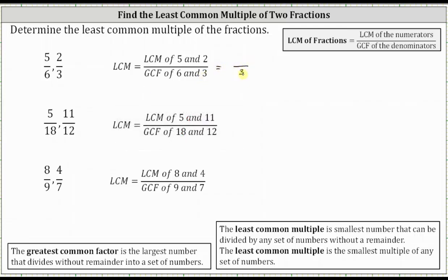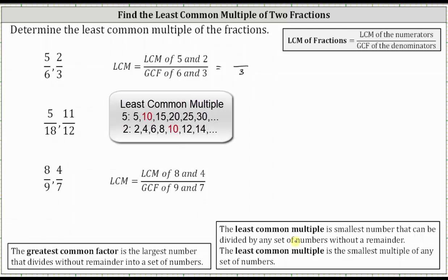Six divided by three is two, and three divided by three is one. The least common multiple can be thought of in two ways: it's the smallest number that can be divided by any set of numbers without remainder, and it's also the smallest multiple of any set of numbers. So the least common multiple of five and two is the smallest number that can be divided by both five and two, which would be five times two, or 10.